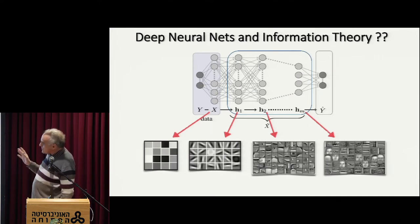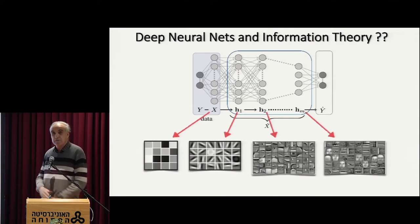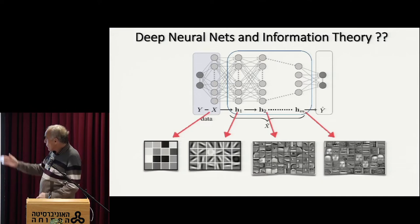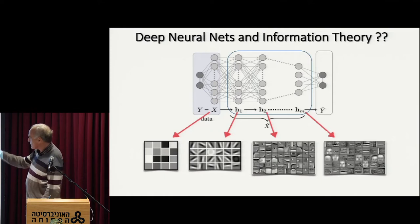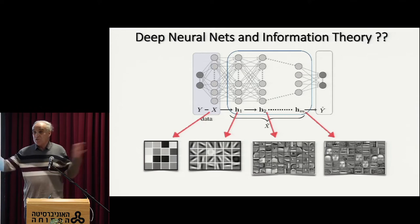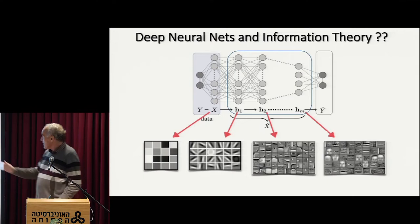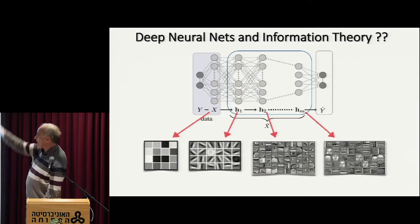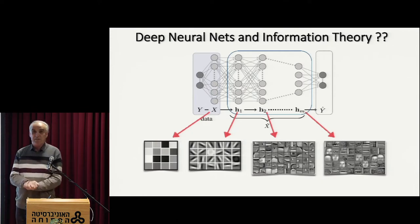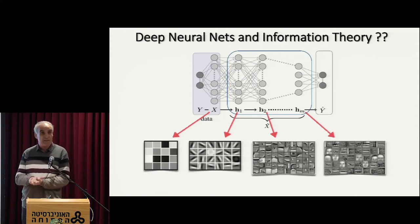What the network is doing: the whole process of sampling the world doesn't depend on the representation of the network. Each one of the hidden layers — this cascade of layers in deep learning, H1, H2, up to TM — for a fixed network, I present X and then H1 depends only on X, H2 depends only on H1, and so on. So this is a Markov chain representation of my input pattern.